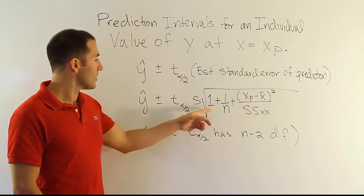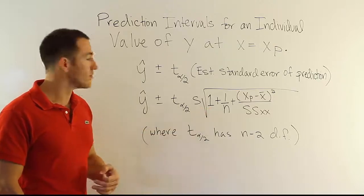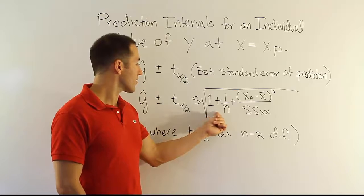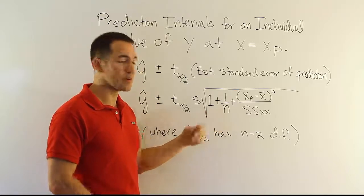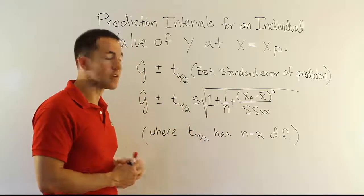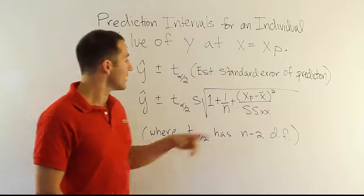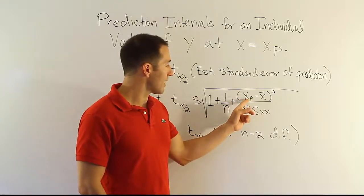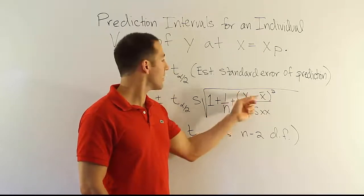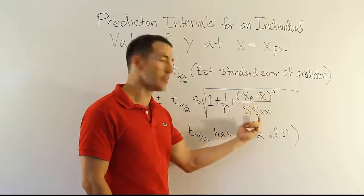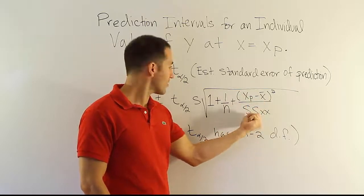The important thing is that this extra 1 is going to mean we're going to have wider intervals, always wider. Because even if we picked a great xp value, like x bar, x bar minus x bar becomes 0, that disappears.